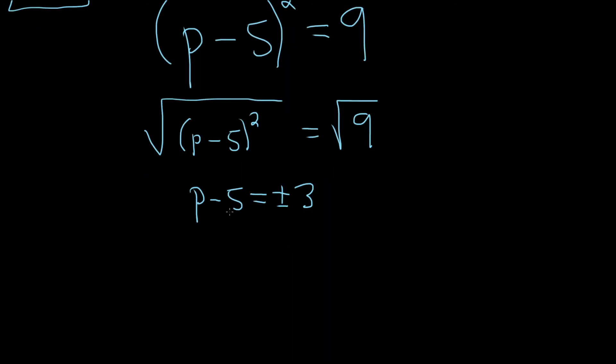The next step is to add 5 to both sides. So plus 5, plus 5. So we have p equals 5 plus or minus 3.